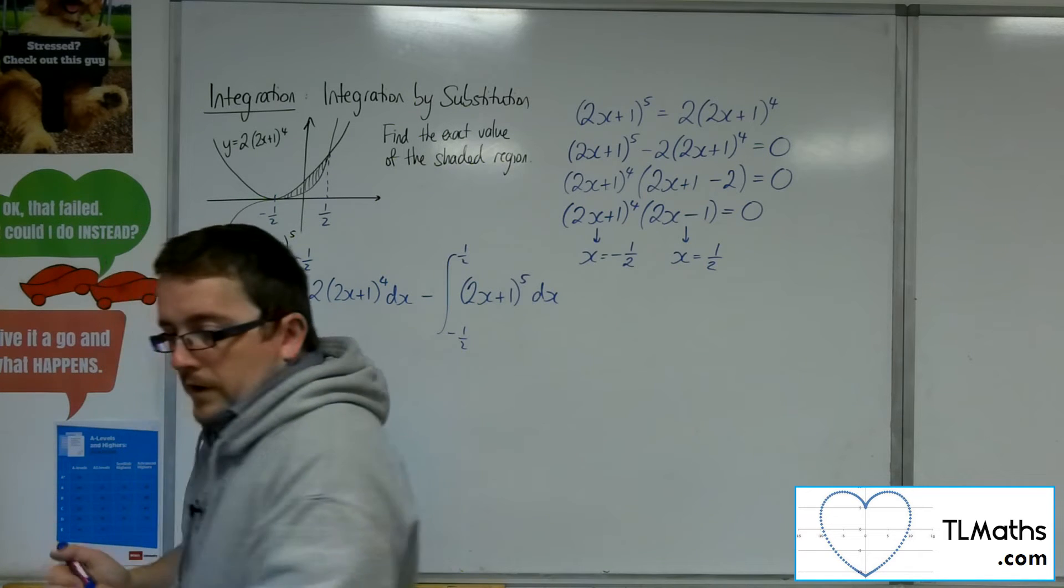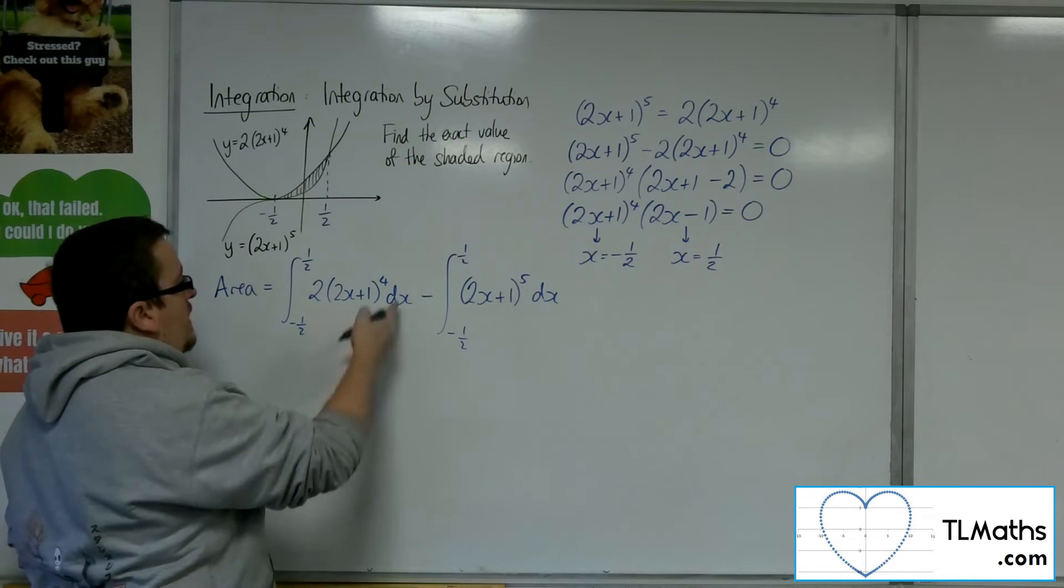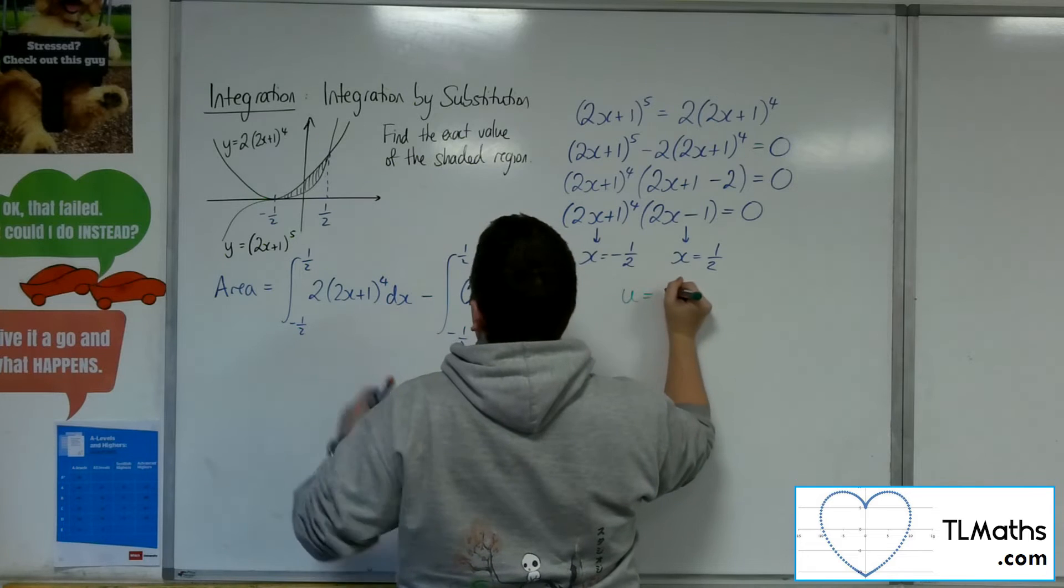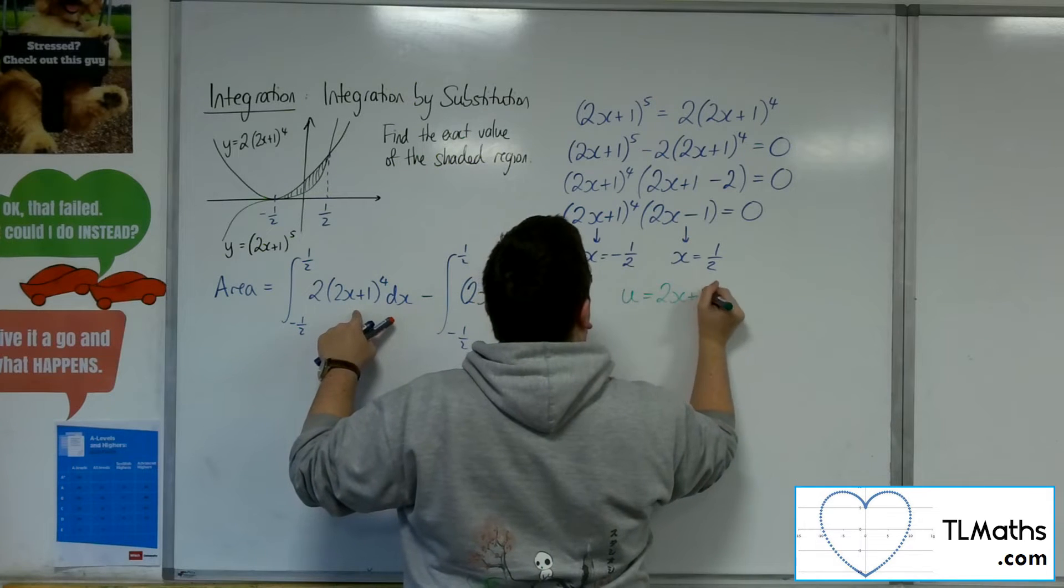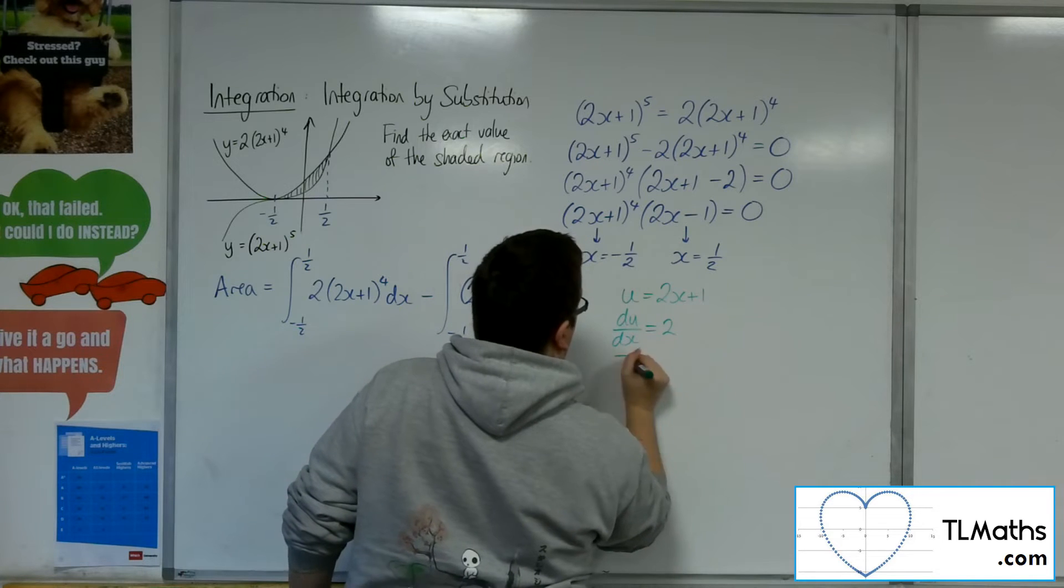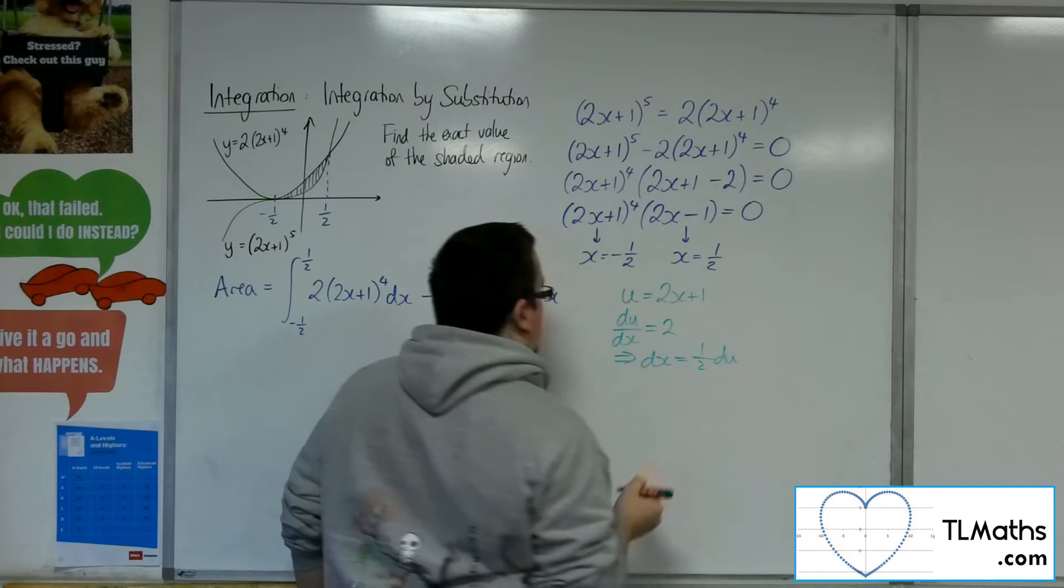So if I do it in another color. Let's go with green for this one. So u would be the 2x plus 1. So du by dx would be 2. And so dx would be a half du.